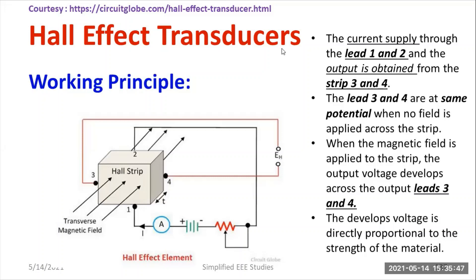How does the Hall effect transducer operate? First, we have to familiarize with the diagram. We have a Hall element, also known as a Hall strip. You can observe different sections labeled 1, 2, 3, 4, and T is the thickness of the material. We provide a current supply to the Hall element using a battery source, a current limiting resistor, and an ammeter to measure the current.